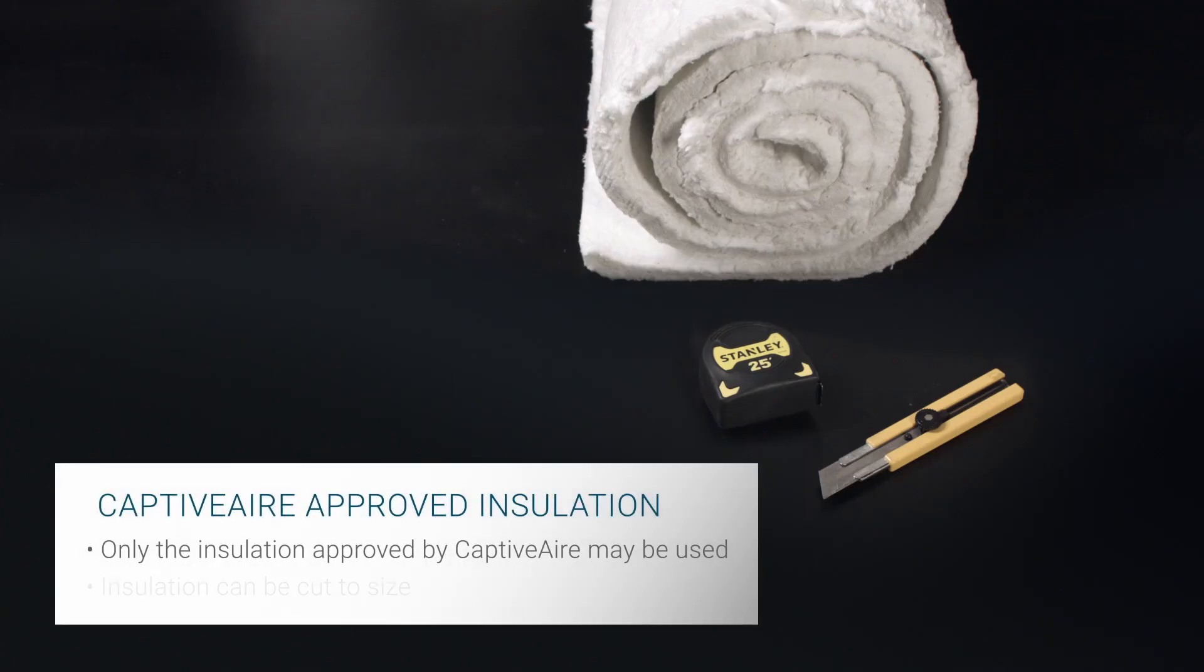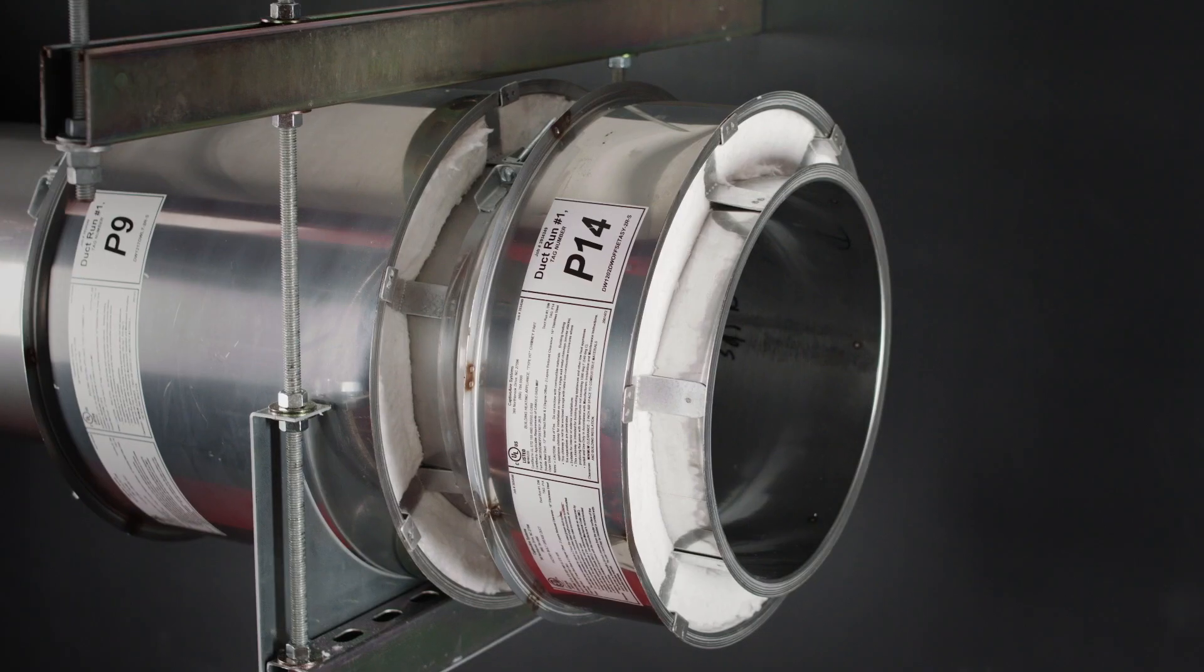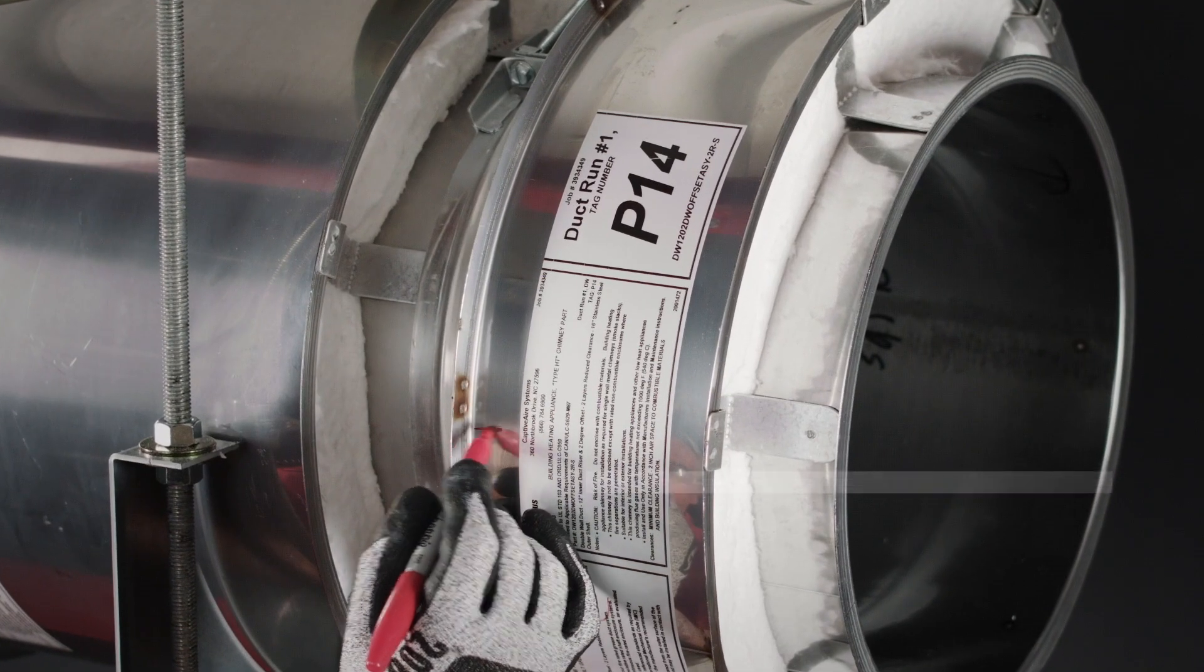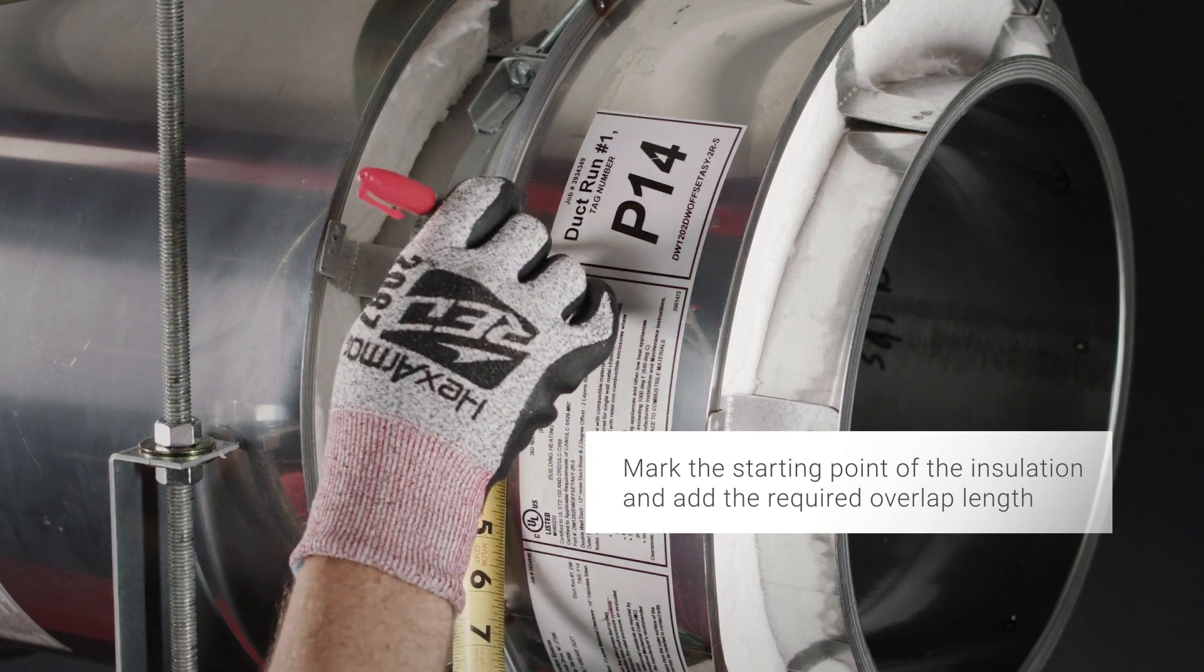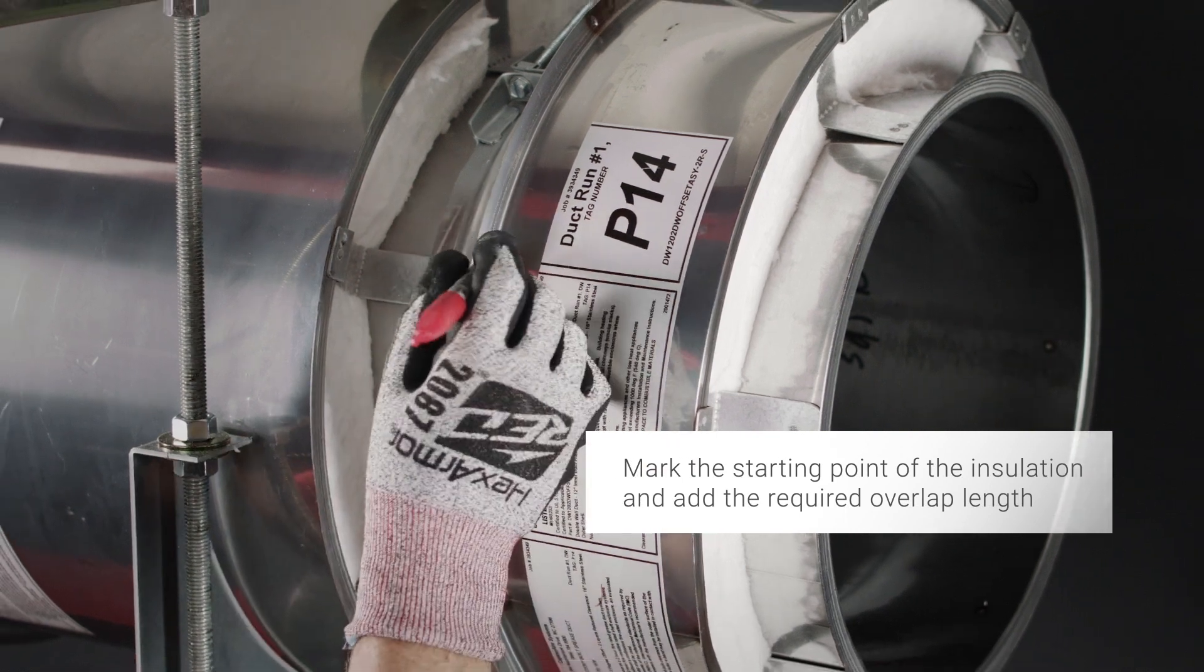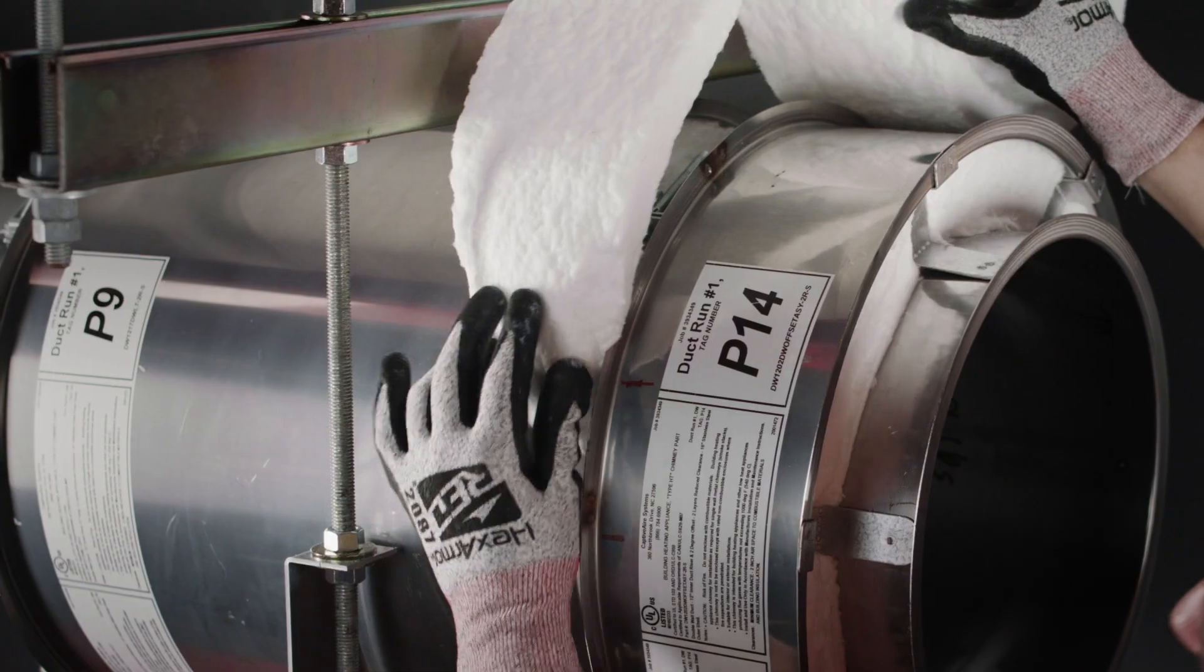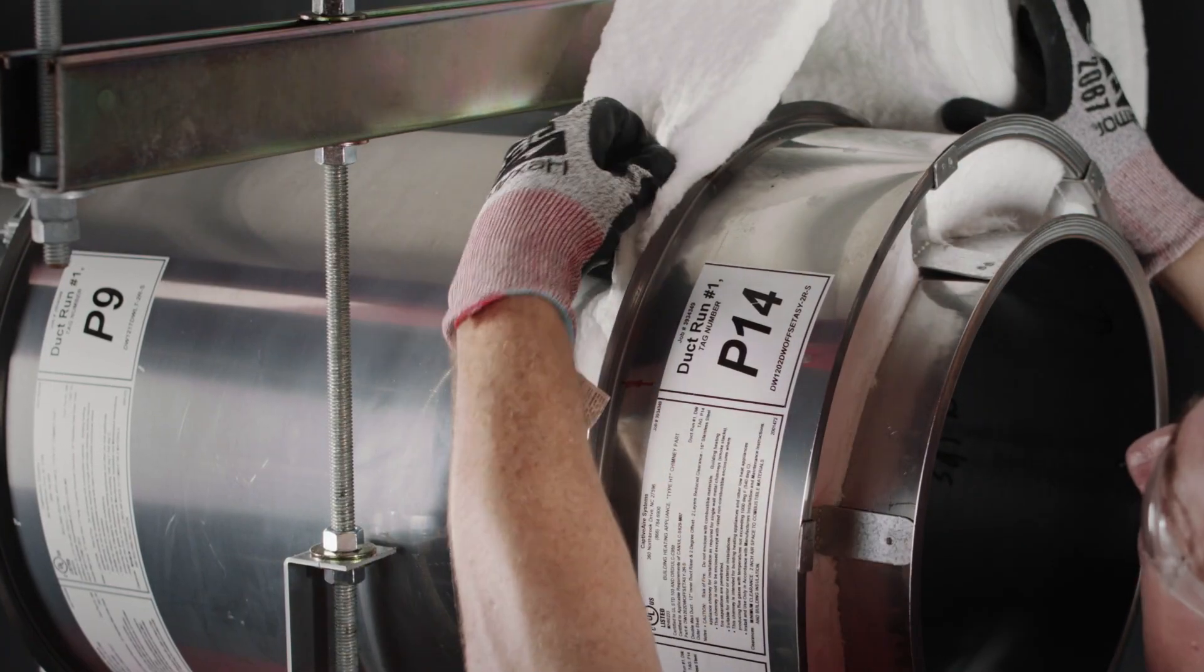You can now apply insulation around the duct. Insulation must be a minimum of 4.5 inches wide, and the same type and number of layers as the base duct. As a reference, mark the duct at the desired starting point of the insulation. Measure 3 inches from this mark, and add a second mark. These two marks will guide you in setting the correct insulation overlap of 3 inches.